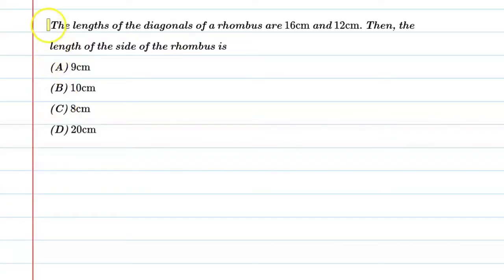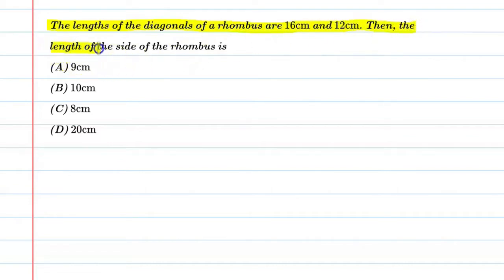Hello students, let's solve this question. The length of the diagonals of a rhombus are 16 centimeter and 12 centimeter. The question asks us to find the length of the side of the rhombus. You know that all the sides of the rhombus are equal.